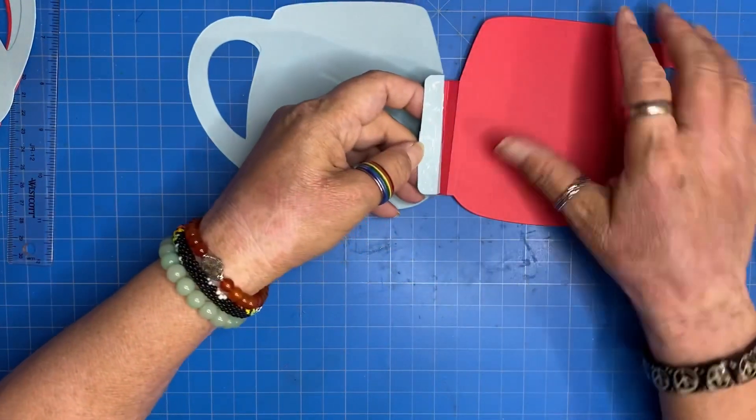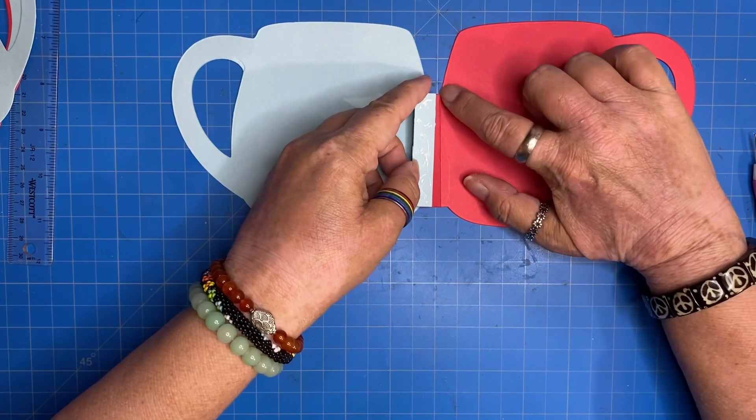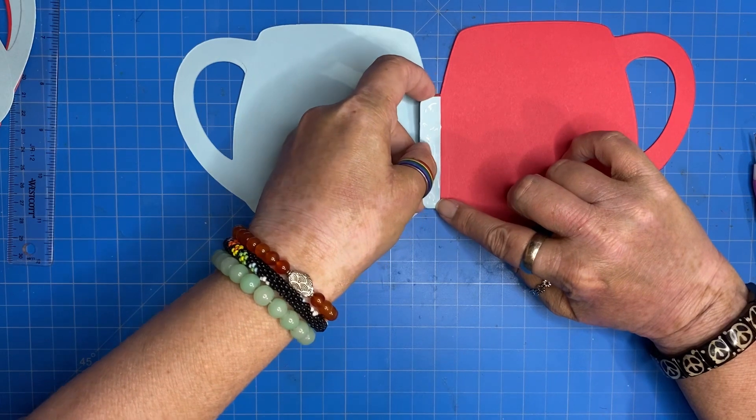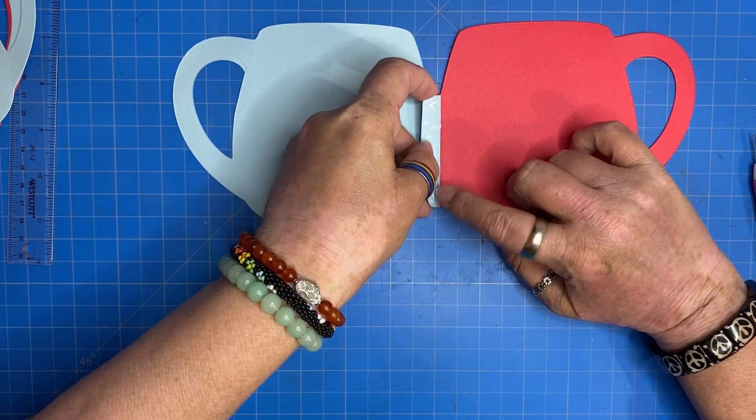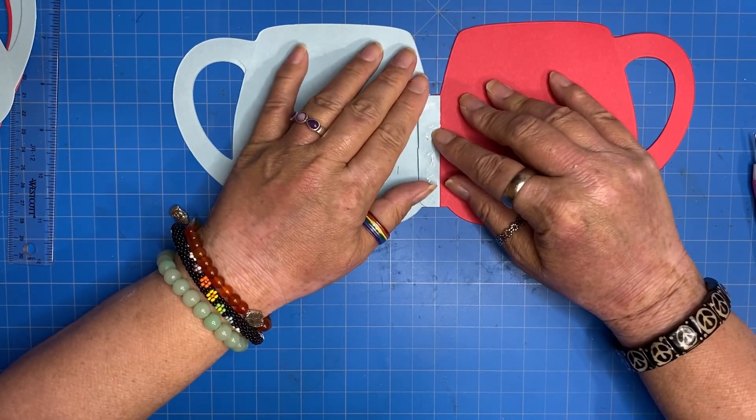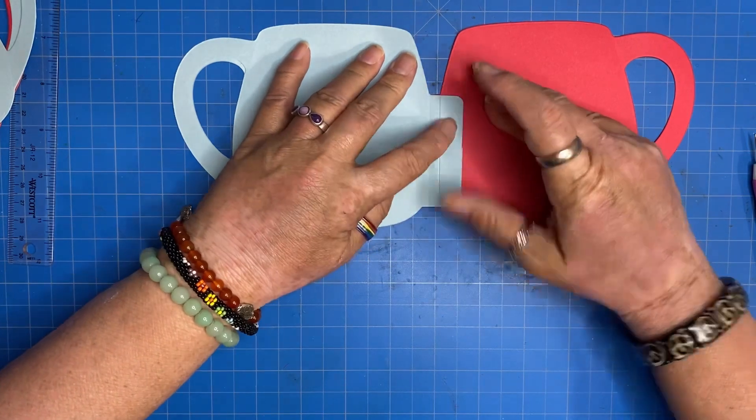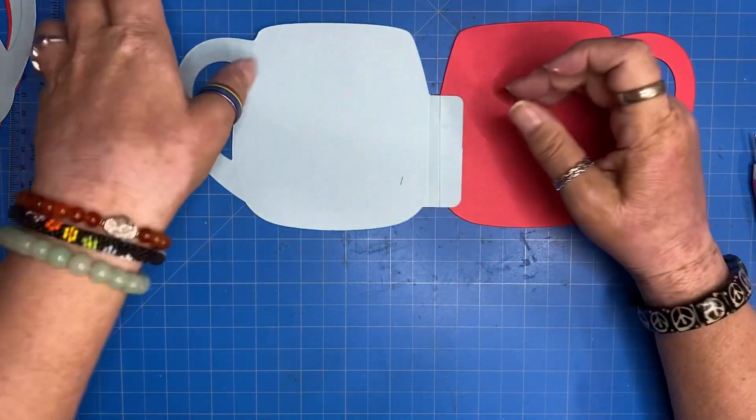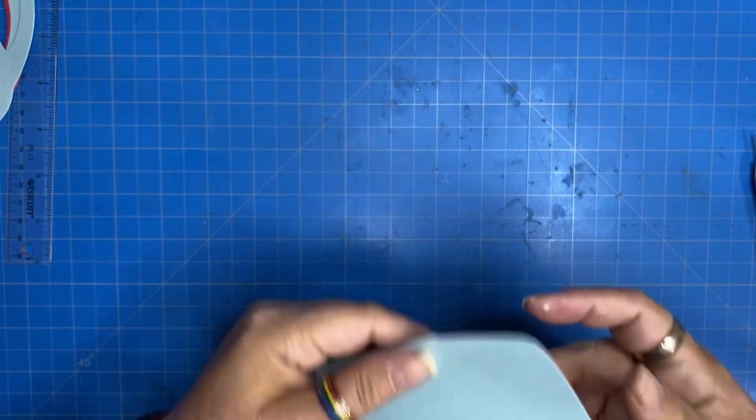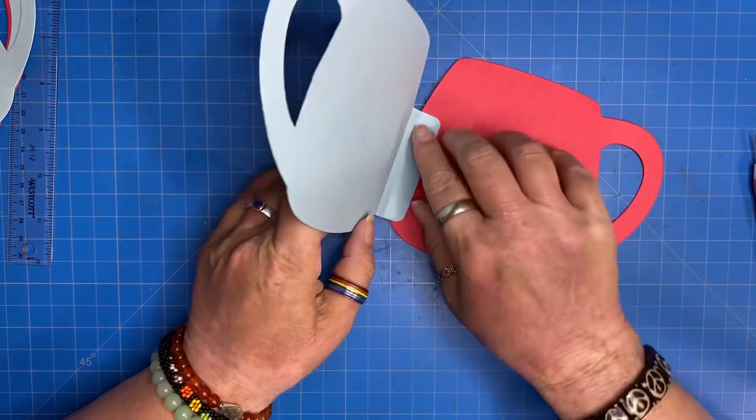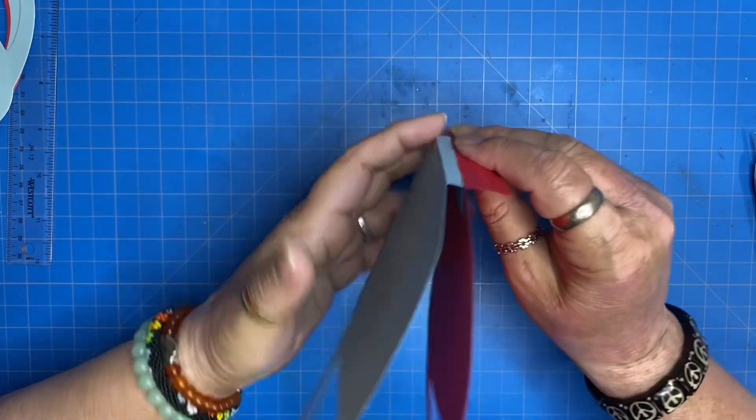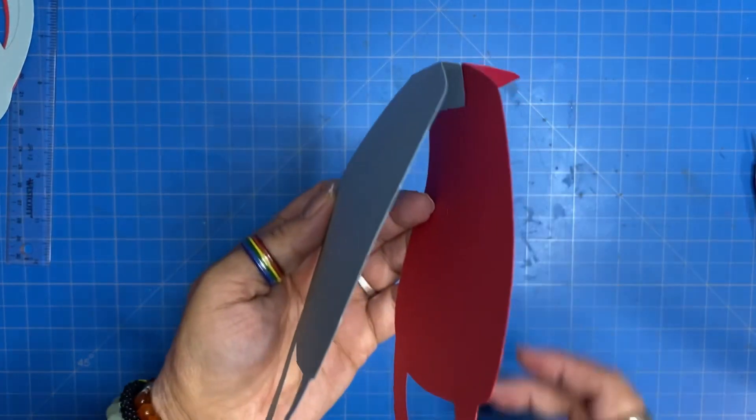I have glue on my half-inch tab. I'm going to line that score line up with the side of my tab. I'm going to kind of eyeball that the other section of the tab, the part behind, is just about at the right spot. Probably burnish it down.